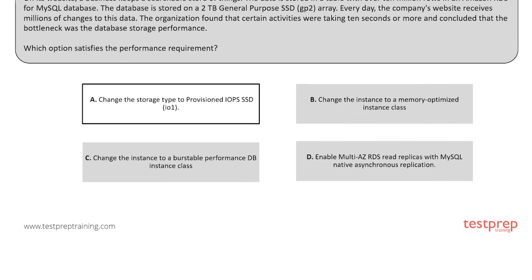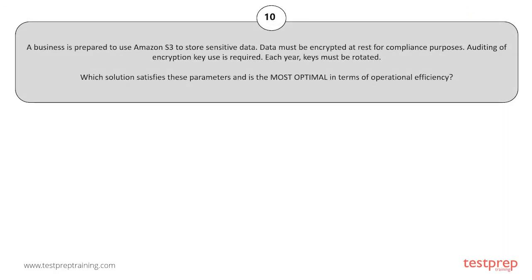Question number ten: A business is prepared to use Amazon S3 to store sensitive data. Data must be encrypted at rest for compliance purposes. Auditing of encryption key use is required, and keys must be rotated each year. Which solution satisfies these parameters and is the most optimal in terms of operational efficiency?